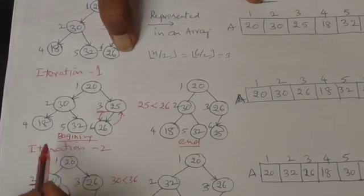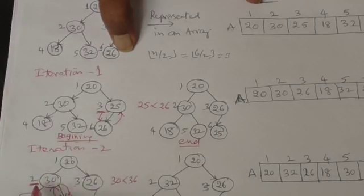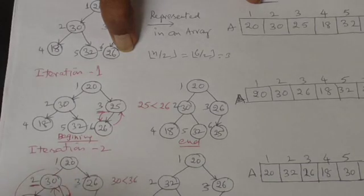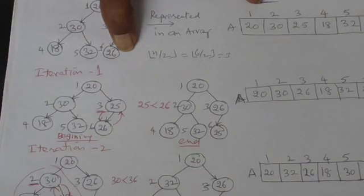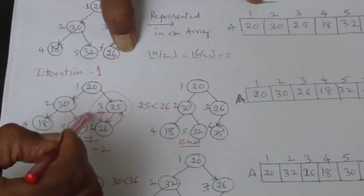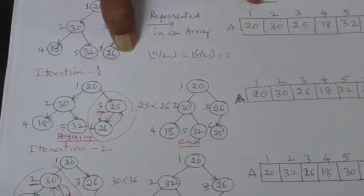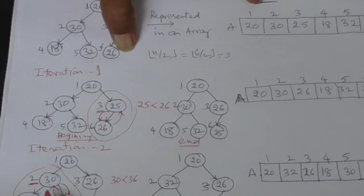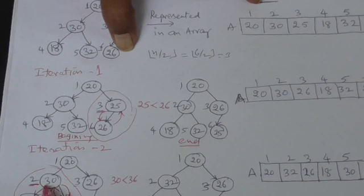Now you consider a node at 2, and in the next iteration you consider only this subtree. Only this subtree is to be considered. In the beginning you considered only this subtree. Now you are only considering this subtree. Now the node being under consideration is this, and its children 18 and 32.